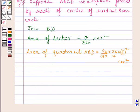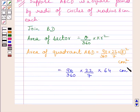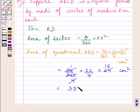This is further equal to 90 upon 360 multiplied by 22 upon 7 multiplied by 64 cm square. Simplifying, we get 352 upon 7 cm square.